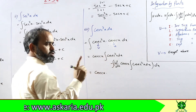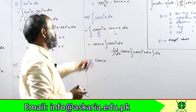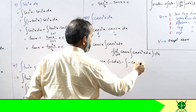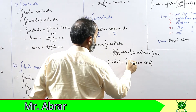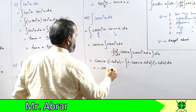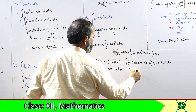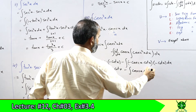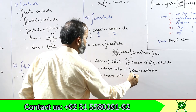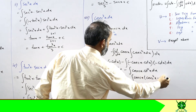cosec²(x) का integrate cot का derivative minus cosec²(x) है - एक minus जुबानी लिख रहे हैं और एक adjust करने के लिए, तो minus cot(x) आजाएगा। cosec(x) का derivative: minus cosec(x)·cot(x)। और integrate करने पर minus cosec(x)·cot(x) आगे। तीन minus आ जाएगा: minus cosec(x)·cot²(x) dx। cot²(x) پر identity use: cosec²(x) minus 1।